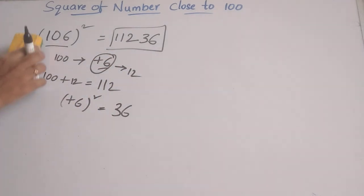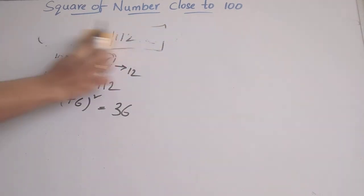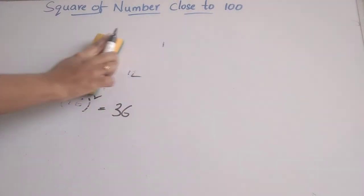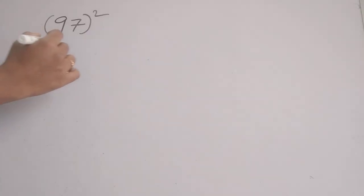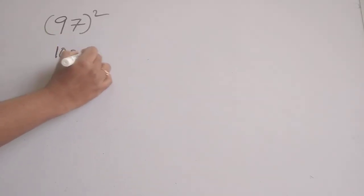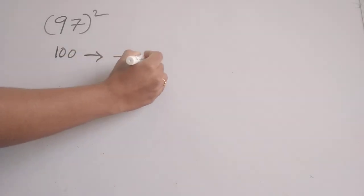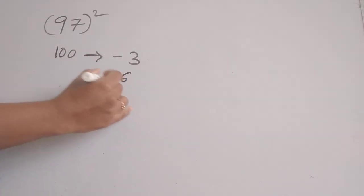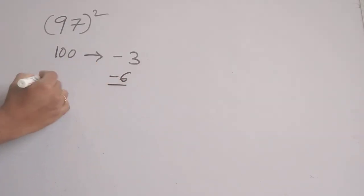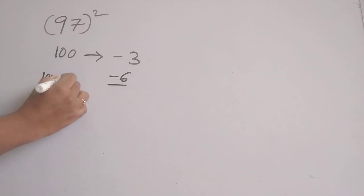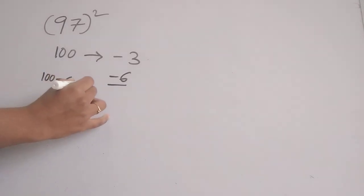Now let's move to one more example: finding the square of 97. First, we compare with 100 — the difference is minus 3. We double this 3, giving minus 6. We subtract 6 from 100 — 100 minus 6 equals 94.